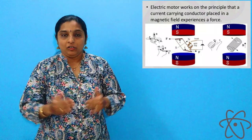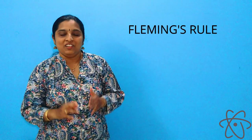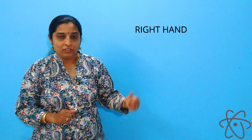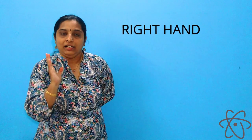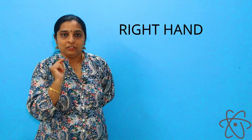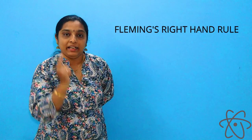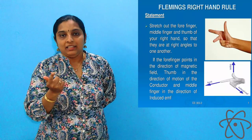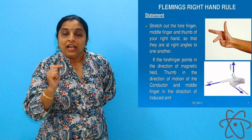For that we have a simple rule. This is also called Fleming's rule. We have already used our left hand, so now only the right hand is left. This is called Fleming's right hand rule, and it is very simple, just like the earlier rule.